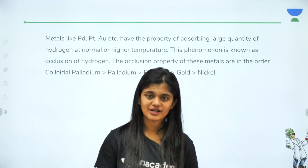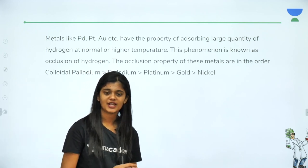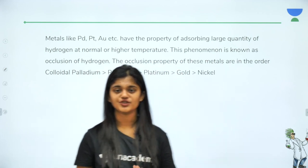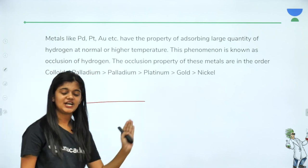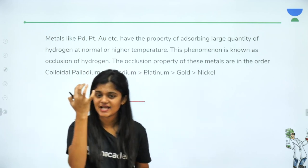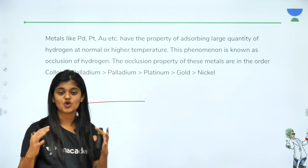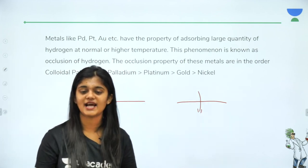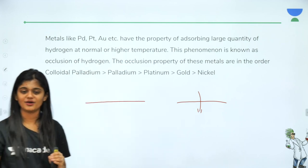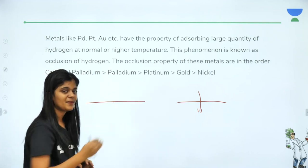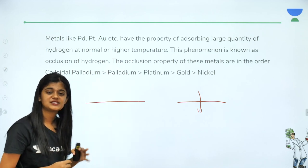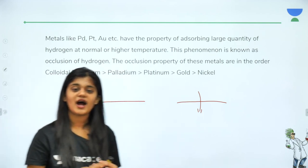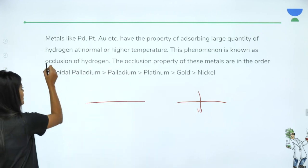There is another interesting property: metals like palladium, platinum, and gold have the property of adsorbing large quantities of hydrogen. Adsorption means locking a gas onto the surface — it is a surface phenomenon, a surface attraction. Absorption means it is taken completely inside, but adsorption is only a surface phenomenon. This phenomenon in hydrogen is called occlusion.